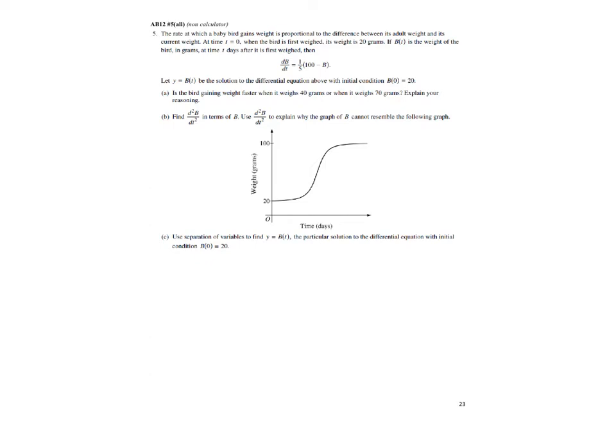Explain using reasoning. Okay, so gaining weight—well, db/dt represents weight gain, a change in weight. So let's find db/dt at 40 grams, or b equals 40, and then we'll find db/dt at b equals 70 grams.